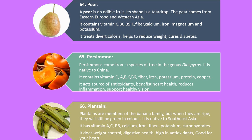Number 66. Plantain. Plantains are members of the banana family, but when they are ripe, they will still be green in color. It is native to Southeast Asia. It has vitamin A, C, B6, calcium, iron, fiber, potassium and carbohydrates. It does weight control, digestive health, is high in antioxidants, and is good for your heart.